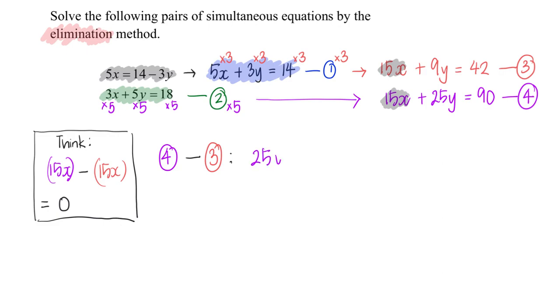So I'm left with 25y minus my 9y. The other side will be 90 minus 42.